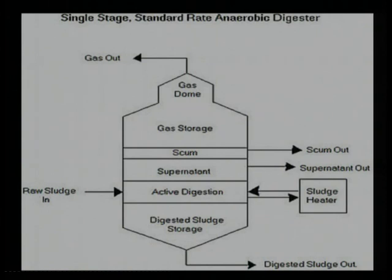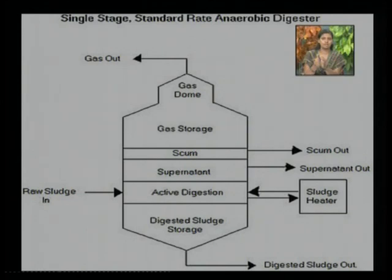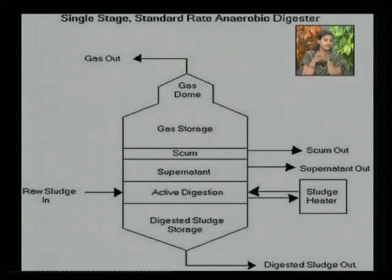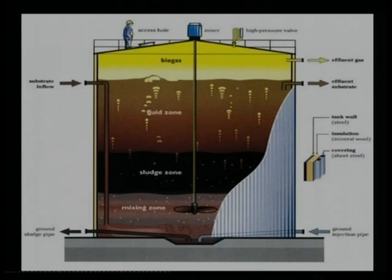The third step is acetogenesis, which involves the acetone group. The fourth and most important step is methanogenesis — the production of methane gas. In the figure of the anaerobic sludge digester, this is a single-stage digester, though double-chambered anaerobic digesters are also available. In the central area, active digestion occurs; sludge is collected from the base and gas is collected from the topmost area.